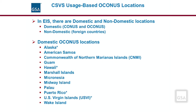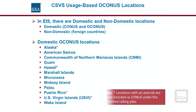The following locations, for usage pricing purposes, are considered domestic locations, although they are outside of the continental United States. The locations with the asterisk are those included as CONUS under the unlimited calling plan.